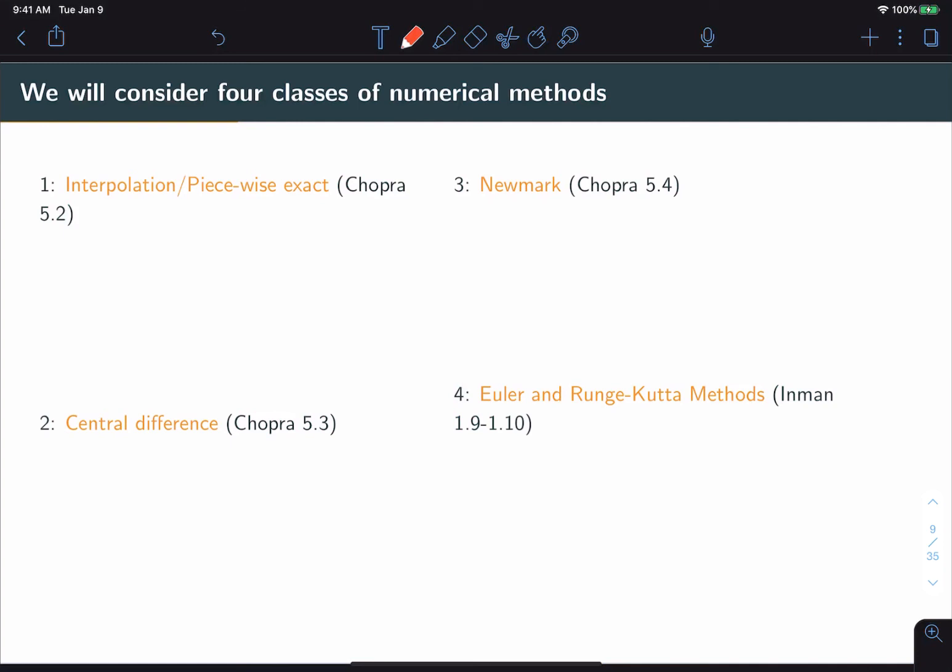We will talk about four methods in the series of videos, which you see here, and to the side is the corresponding chapter associated with each method. Chopra only covers interpolation, central difference, and Newmark. We're going to the Inman book for Euler and Runge-Kutta methods. Spoiler alert, methods three and four, particularly Newmark and the Runge-Kutta method are going to be our go-to for almost any kind of problem. However, interpolation and central difference are presented mostly for your benefit, so you get a nice broad view of the numerical methods available. They tend to show up here and there, and so it's important to at least know some general information, but our focus is going to be, particularly in the coding, on Newmark and Runge-Kutta methods.